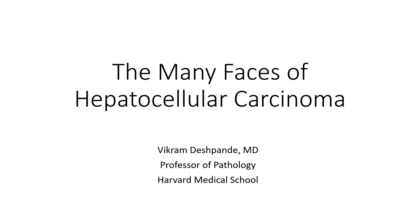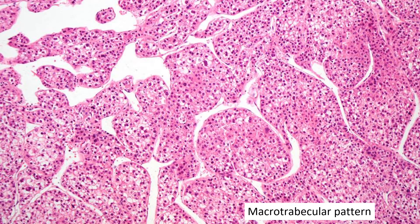This is going to be so much fun to talk about the many phases of HCC. There's your classic HCC — cells look like hepatocytes — and then there's variations on that theme. Let's start by talking about one of the classic patterns of HCC: the so-called macro-trabecular pattern. The macro-trabecular pattern is defined by the presence of endothelial wrapping, and the stuff between those endothelial cells are the macro-trabeculae. This is diagnostic of an HCC.